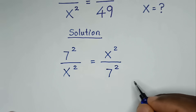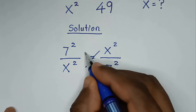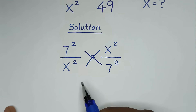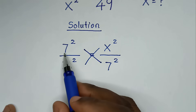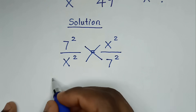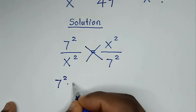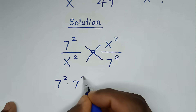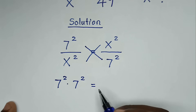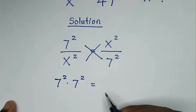Then in the next step we will cross multiply. So it will be 7 squared times 7 squared is equal to x squared times x squared.